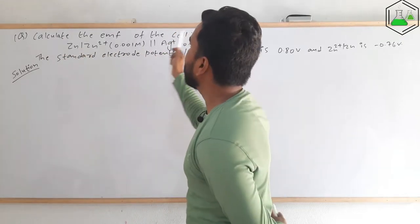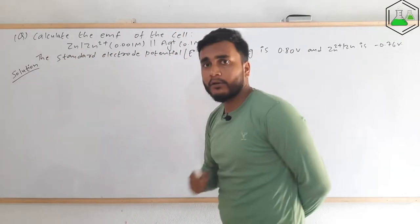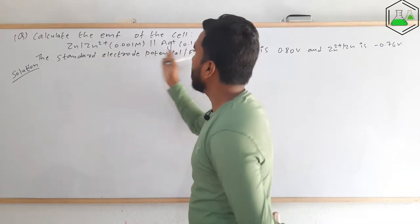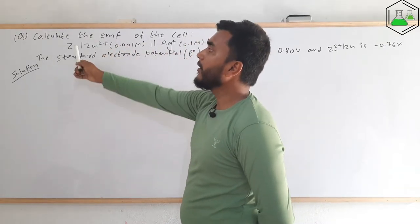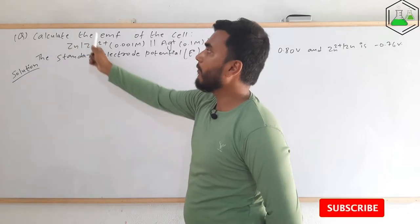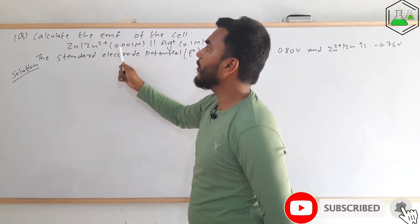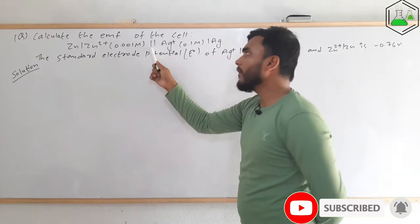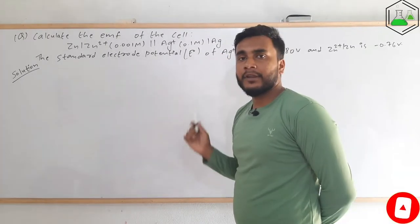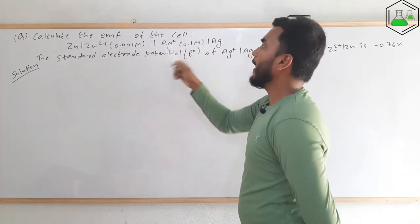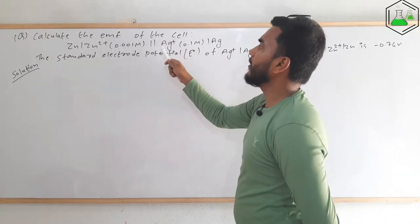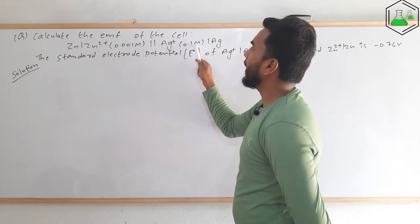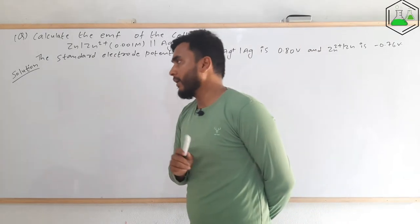Let's start. The first numerical problem asks us to calculate the EMF of the cell. The cell notation is given: on the left side, zinc is converting to zinc ion whose concentration is 0.001 M. The double vertical line represents a salt bridge in the cell. On the right side, silver ion whose concentration is 0.1 M is converting to silver metal.